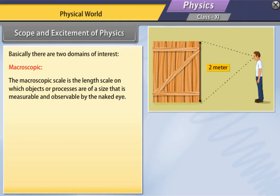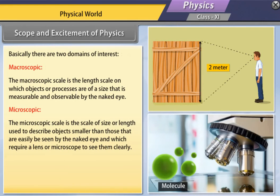Microscopic. The microscopic scale is the scale of size or length used to describe objects smaller than those that can easily be seen by the naked eye and which require a lens or microscope to see them clearly.